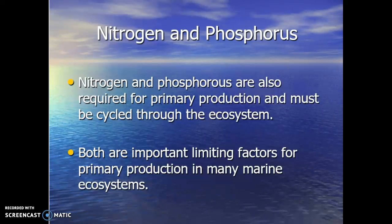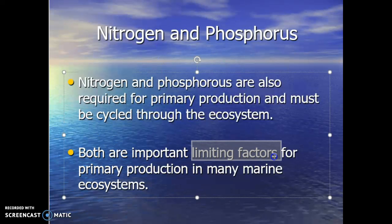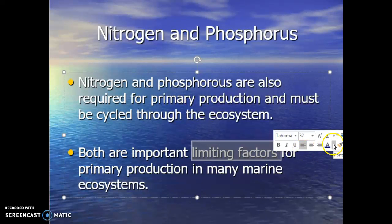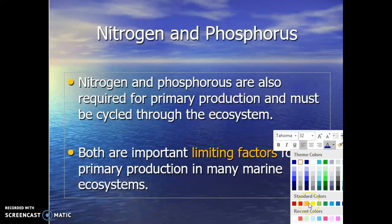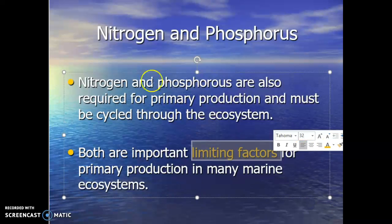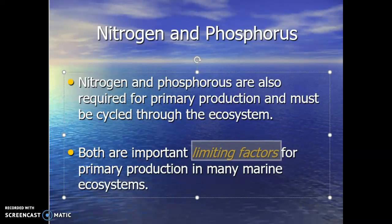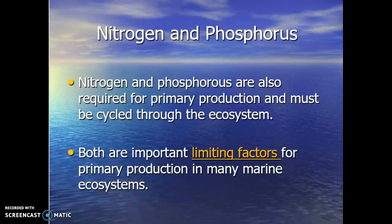So nitrogen and phosphorus are really important for photosynthesis and primary production - to produce energy at the producer level. The thing we'll see with nitrogen and phosphorus is that they are often considered limiting factors. So for a lot of producers, this is a big limiting factor. They don't have enough, they don't have the right levels, so their populations are somewhat held in check.